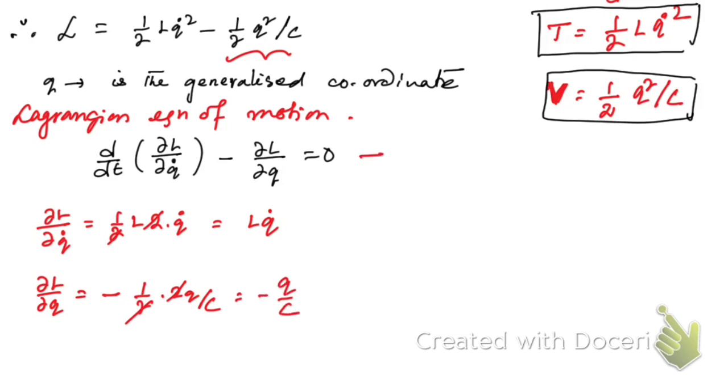This is equation 1, and this is equation 2. Using equation 2 in equation 1, we have the time derivative: d/dt(LQ̇) - (-Q/C) = 0.